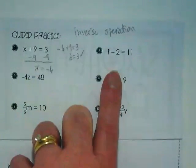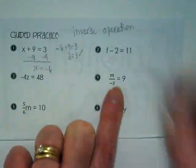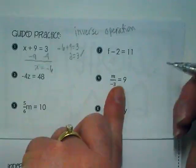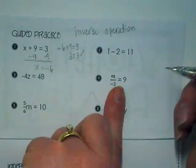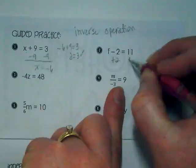Let's move to number 2. I see subtraction, so what am I going to do? And what am I adding? 2. Why the 2 and not the 11? Because 2 is with the f. 2 is with the f, and we want to get the variable by itself. So we're going to add the 2.